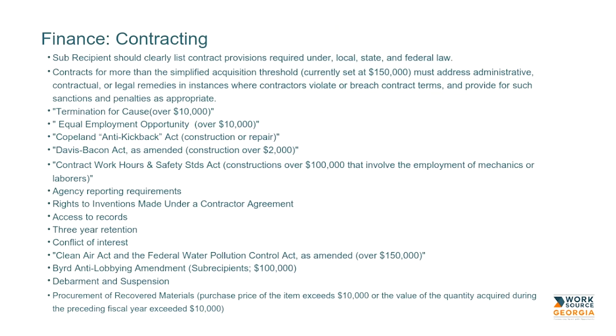Contracts for more than the simplified acquisition threshold, currently set at $150,000, must address administrative, contractual, or legal remedies in instances where contractors violate or breach contract terms and provide for sanctions and penalties as appropriate. We're looking for a provision that states legal matters such as arbitration and the ability to terminate a contract without cause.